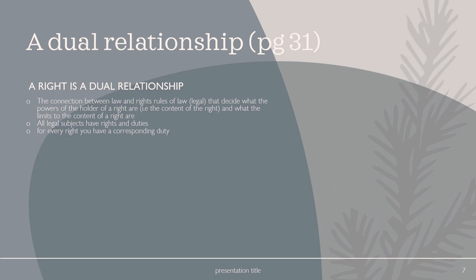We move on to dual relationships. A dual relationship is the connection between law and rights — rules of law that decide what the powers of the holder of a right are, the content of the right, and what the limits to the content of a right are. All legal subjects have rights and duties, and for every right, you have a corresponding duty. There's a nice diagram in our textbook on page 31.